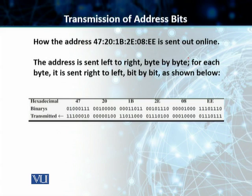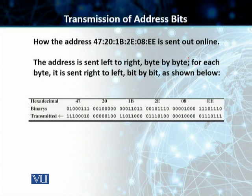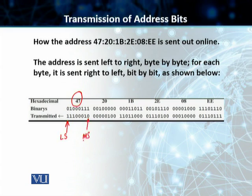We'll look at the transmission of these address bits. The point is that how we transmit the bit is not how we actually write a specific address bit in the case of Ethernet. The address is transmitted left to right, byte by byte. But for each byte, the least significant bit is sent first and the most significant bit is sent last. For example, with 47 as a hexadecimal, we convert it into binary, and the least significant bit is sent first and the most significant bit is kept to the last.